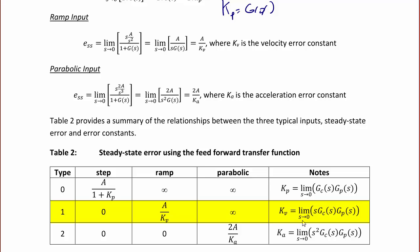KV is the limit as S approaches 0 of S·G(S). For a type 2 system, the step error is 0, the ramp error is 0, and the parabolic steady-state error is 2A over KA, where KA is the limit as S approaches 0 of S²·GC·GP. Hopefully you can see the pattern — if we went up to type 3, type 4, and so on, the steady-state error will continue to increment by 1 and you solve the equation for the error constant.